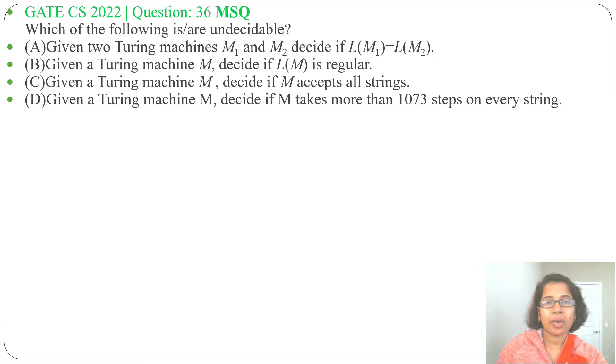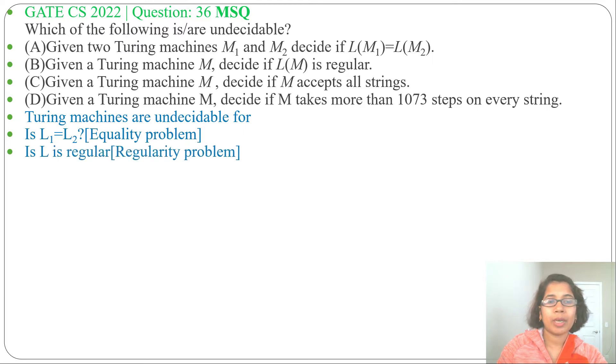I already discussed undecidability, just go through that chapter. We know that Turing machines are undecidable for equality problem is L1 equals to L2, for regularity problem is L is regular, and for completeness problem is L accept all strings.